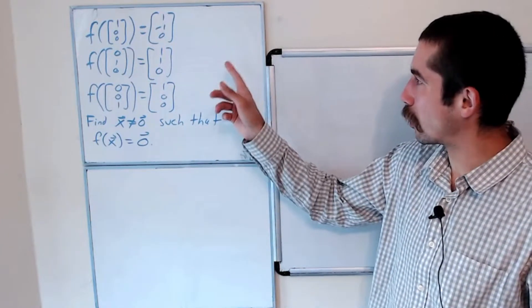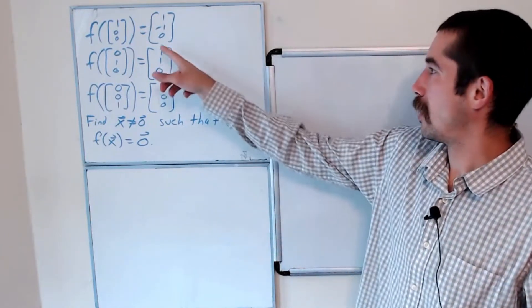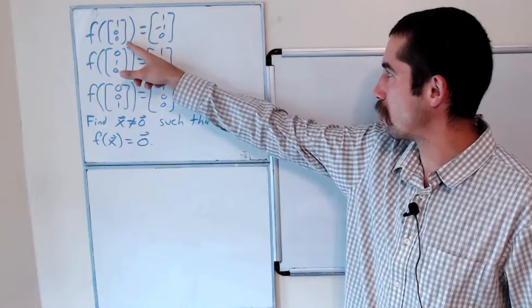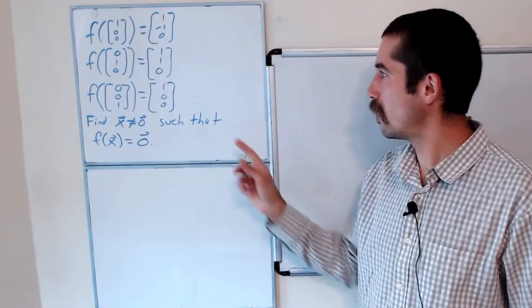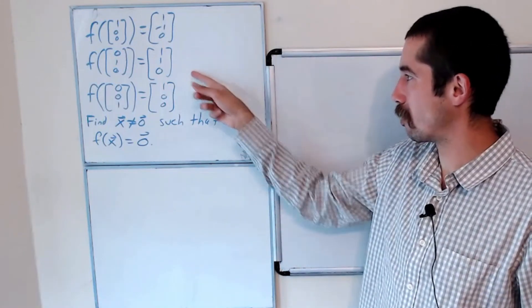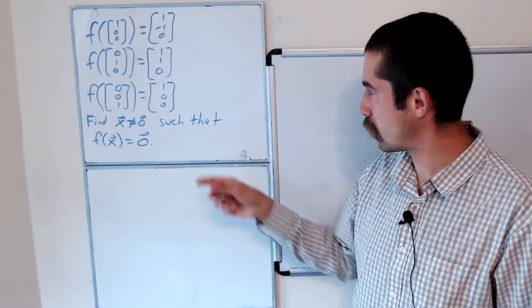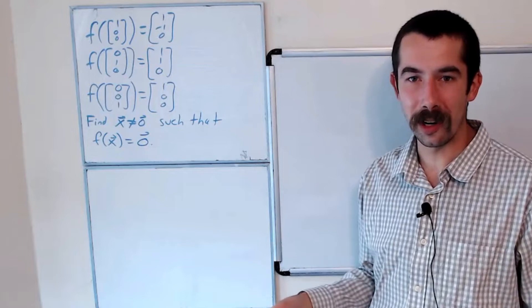So we have this function, it's a linear map that sends (1,0,0) to the vector (1,-1,0). It sends (0,1,0) to (1,1,0), and it sends (0,0,1) to (1,0,0).